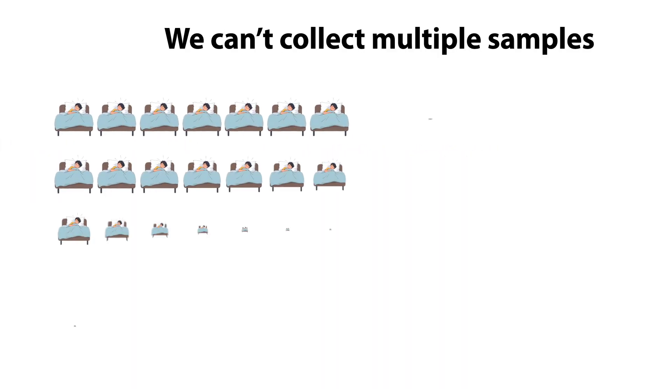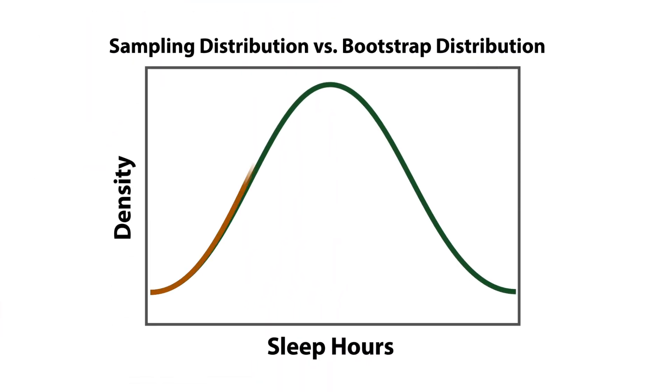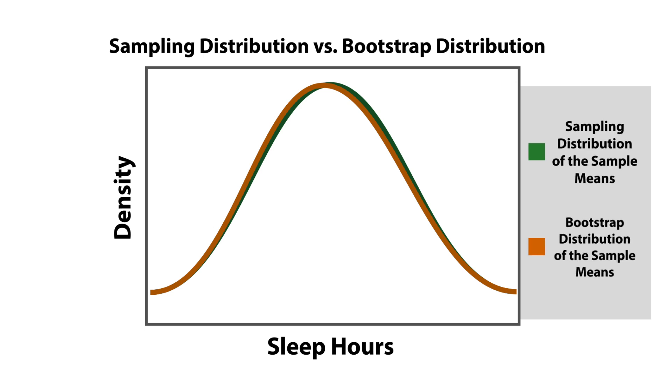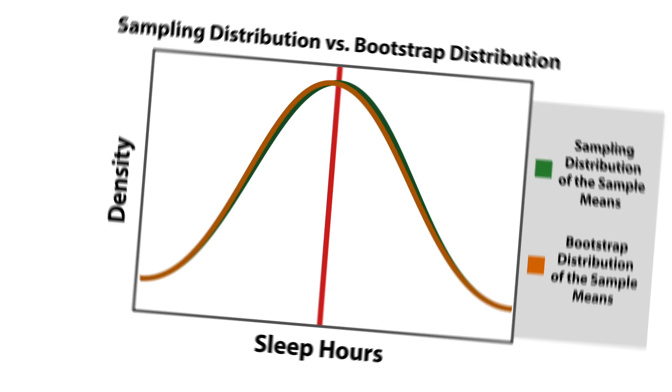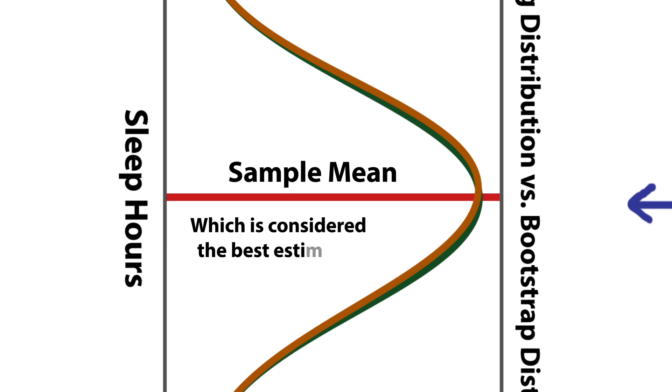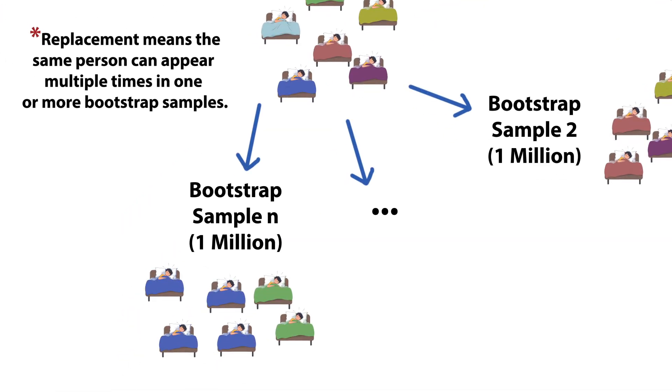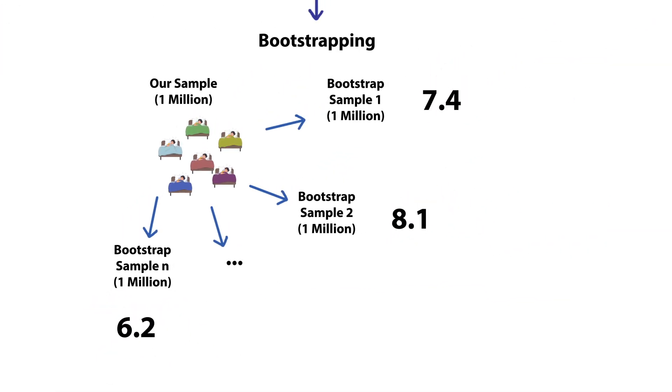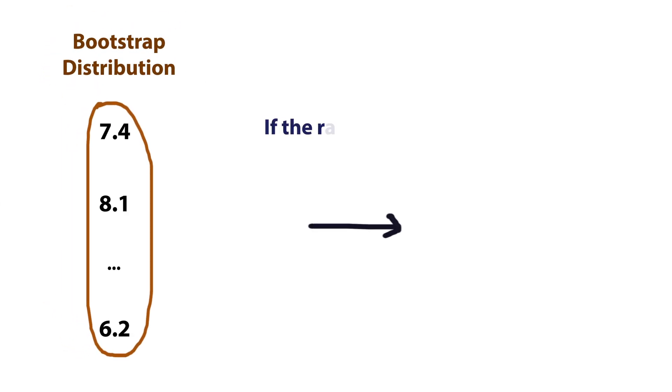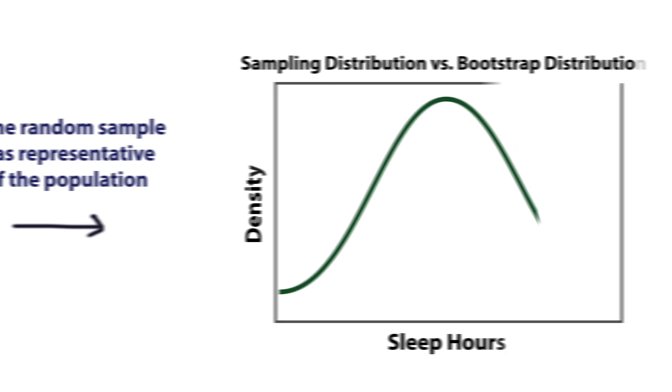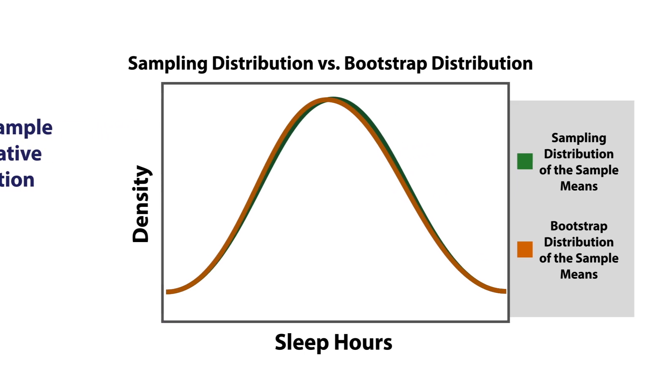However, in practice, we often can't take multiple samples from the population. Instead, we collect one sample and use bootstrapping to approximate the sampling distribution, which is then used to approximate a number, or as we call, a point estimate, from the population distribution. It involves drawing random samples with replacement from the original random sample. By calculating the mean of these bootstrap samples, we create the bootstrap distribution. If the initial sample is representative enough, the bootstrap distribution will closely mimic the sampling distribution.